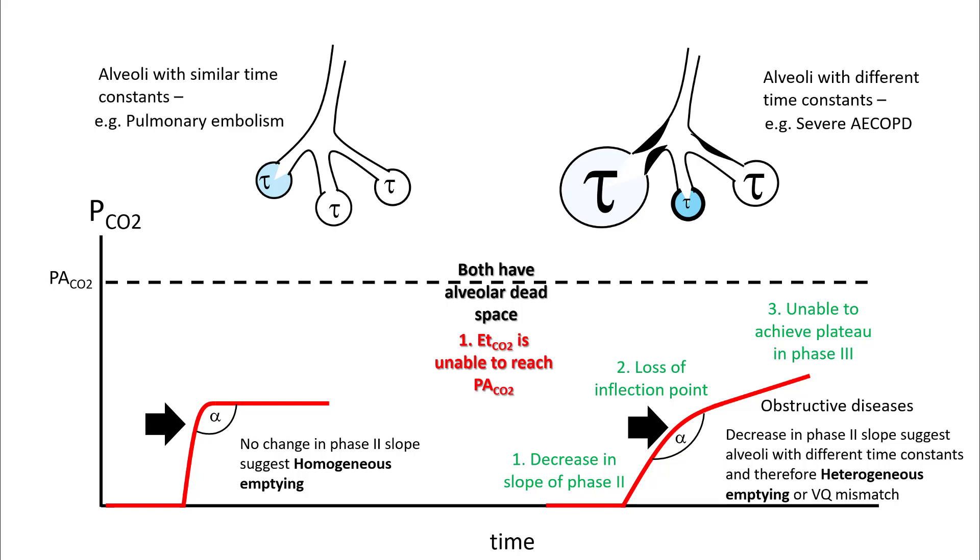In conditions like pulmonary embolism, the alveoli have similar time constants and you will not notice much change in the slope of phase two.